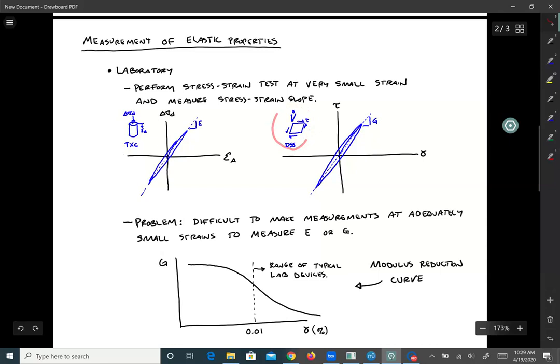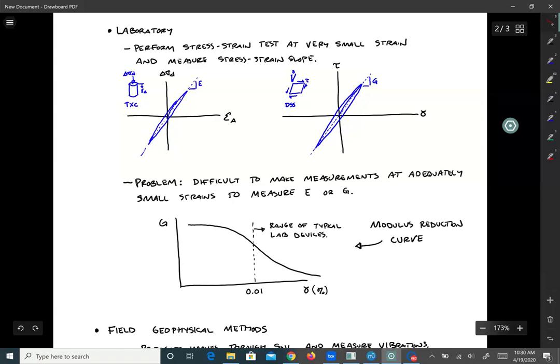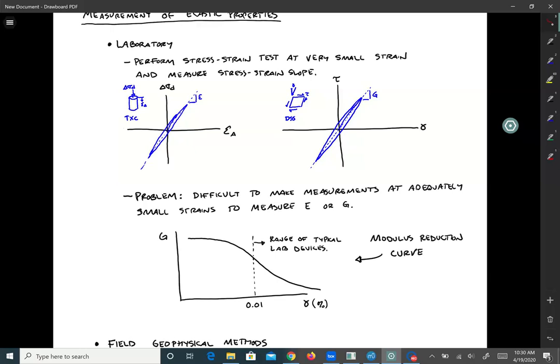Similarly, we could do a direct simple shear test, try and keep the strains tiny, and then measure the slope—that's the shear modulus. Now the problem with doing this is that it's really difficult to make measurements at adequately small strains. Here's a plot: shear modulus versus strain amplitude. If we imagine we ran the simple shear test and kept increasing the cyclic strain amplitude with each loading cycle, the modulus will reduce as gamma increases.